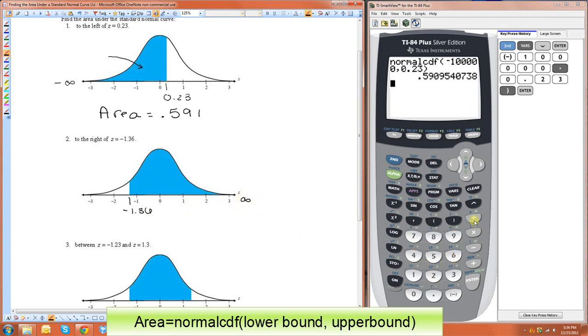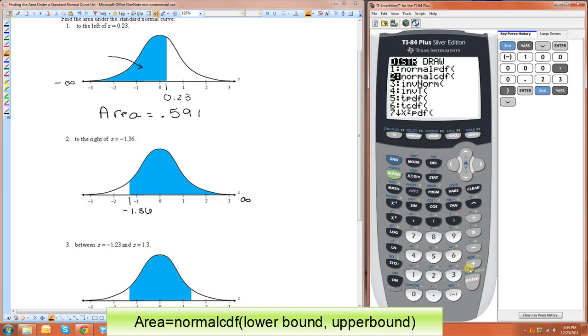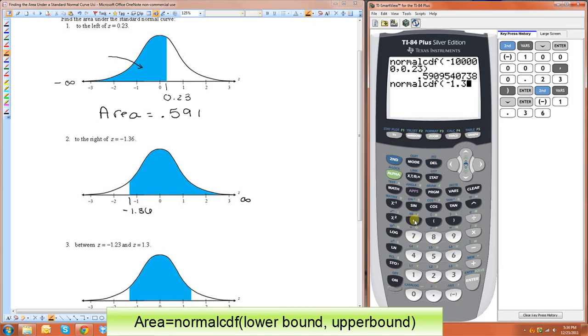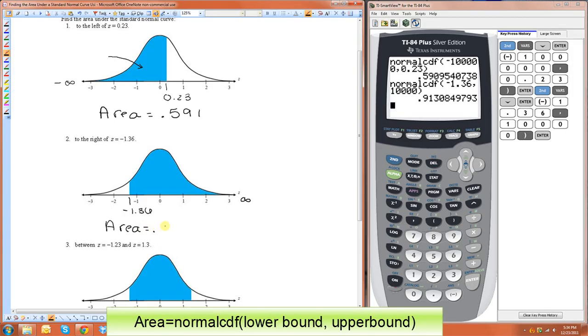So we just do normal cdf, and we do negative 1.36 comma, and then 10,000. So the area is equal to 0.913.